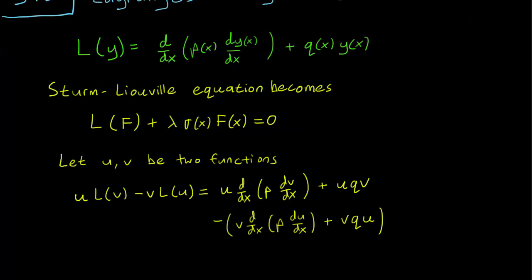We can write the difference between uL(v) and vL(u) as follows. Remember that L is just the derivative of p times dv/dx plus qv. So uL(v) just involves putting a u in front of both those terms. And the vL(u) term, which we are subtracting, is the same thing except we replace the v with u and the u with v.